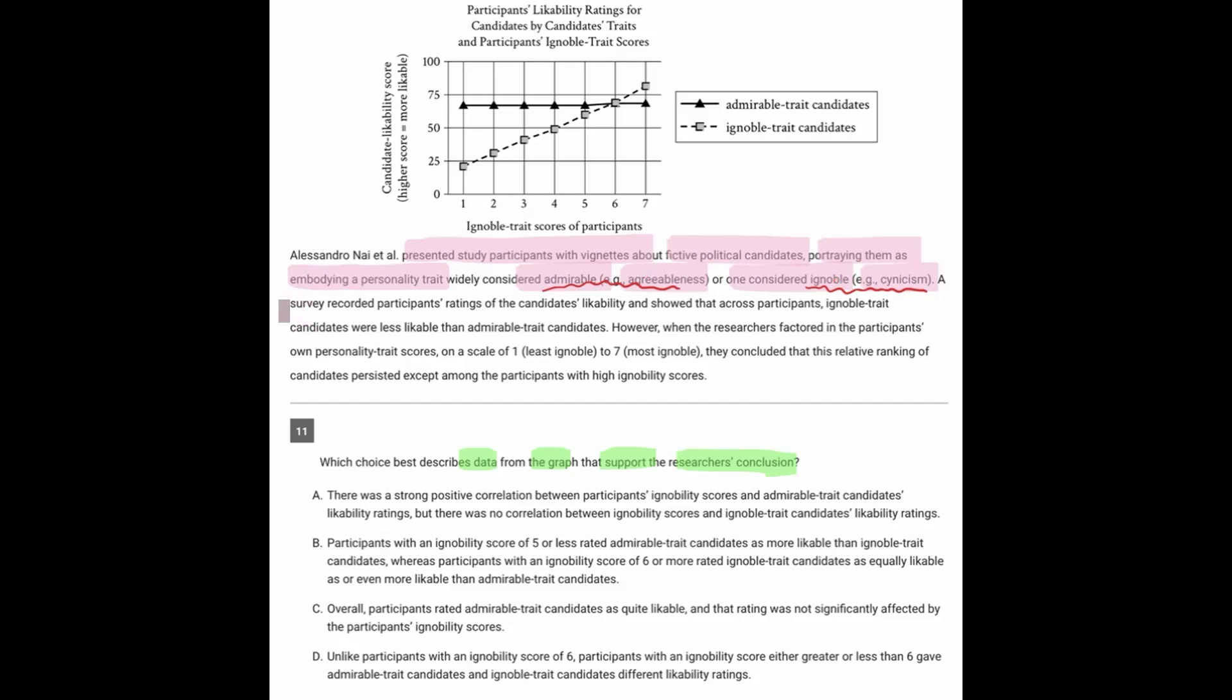So going onward, the survey recorded their ratings of the candidates' likability and showed that across participants, ignoble trait candidates were less likable than admirable candidates. However, when the researchers factored in the participants' own personality trait scores, they concluded that this relative ranking persisted except among the participants with high ignoability scores.